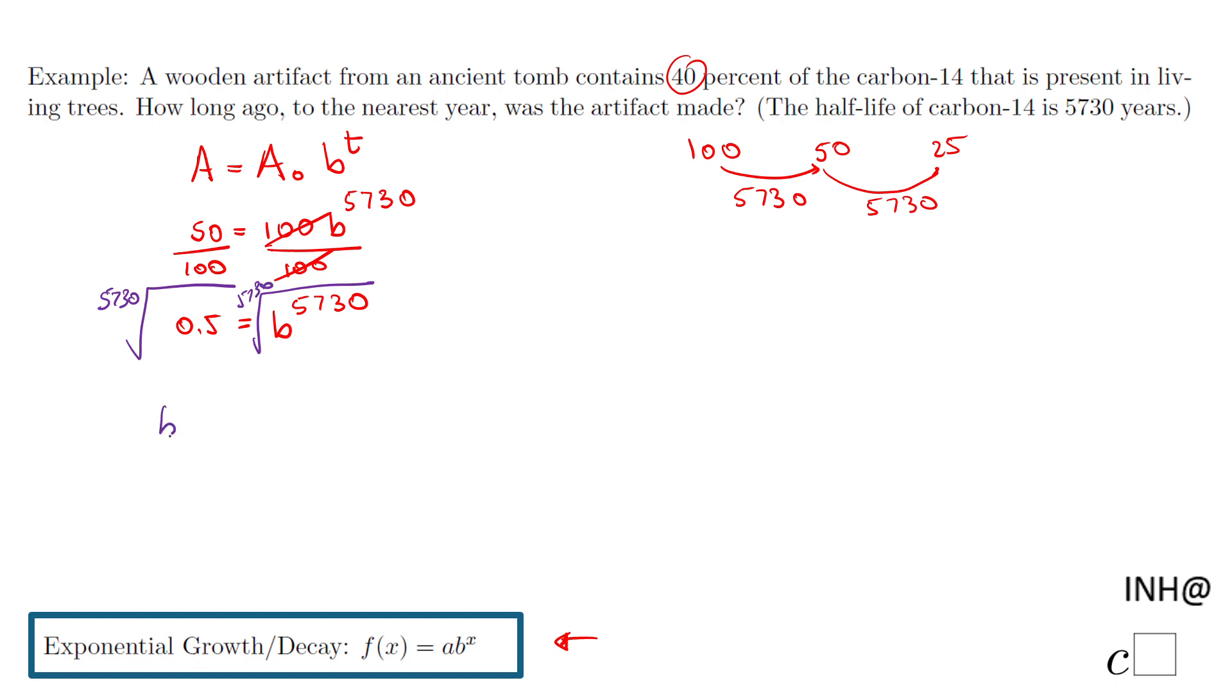For finding b, we're going to have to take this wonderful root on both sides. In fact, b will be the 5730th root of 0.5. You can grab a calculator and eventually find it out if you want, but we don't really need it.